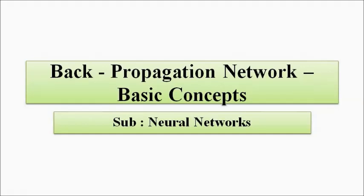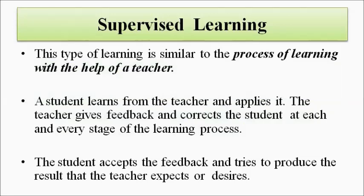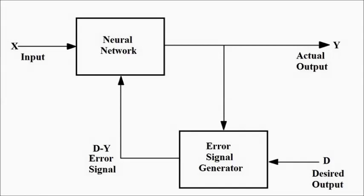In this video we are going to discuss about another very important neural network model which is the backpropagation neural network. It is based on the supervised learning mechanism, which is based on the concept of feedback — the desired output — where comparison takes place between the actual output and the desired output, and based on the error signal, the change in the weights or structure of the neural network happens.